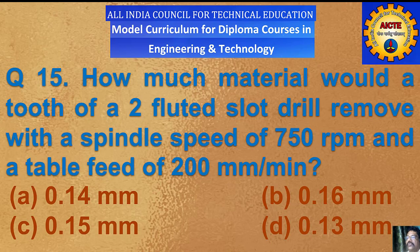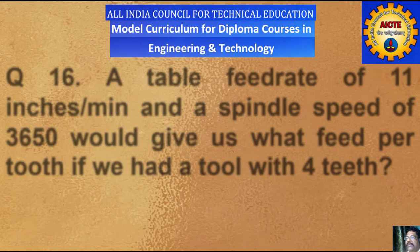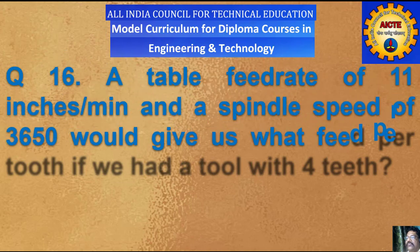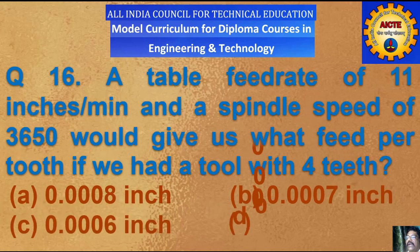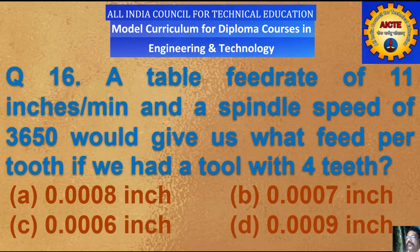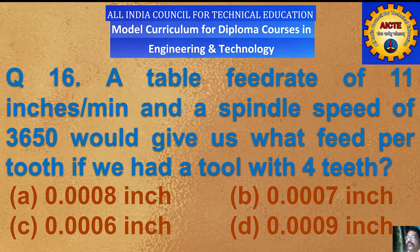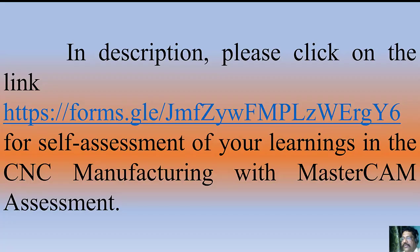And now the last question — question number 16: a table feed rate of 11 inches per minute and a spindle speed of 3650 rpm would give us what feed per tooth if we had a tool with 4 teeth? A) 0.0008 inch, B) 0.0007 inch, C) 0.0006 inch, D) 0.0009 inch. In the YouTube description, please click on the link for self-assessment of your learning in the CNC Manufacturing with Mastercam assessment.